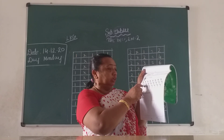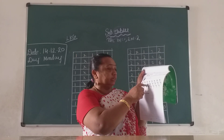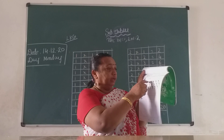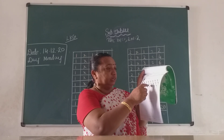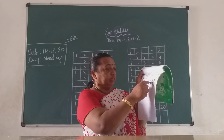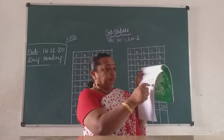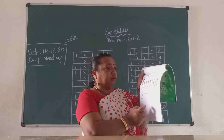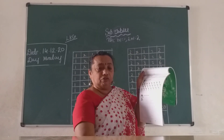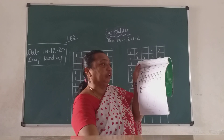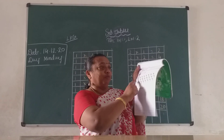One, two, three, four, five, six, seven, eight, nine, ten, eleven, twelve, thirteen, fourteen, fifteen, sixteen, seventeen, eighteen, nineteen, twenty, twenty-one, twenty-two, twenty-three, twenty-four mangoes are there. You have to take out your pencil and circle seventeen mangoes.